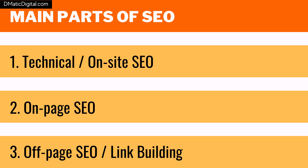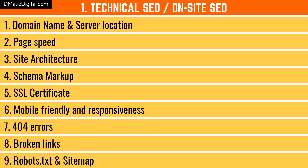You can categorize these 200 signals into three parts — or three major parts of SEO. First is technical SEO or on-site SEO. Second is on-page SEO. And third is off-page SEO, also known as link building. Let's quickly learn about all three parts of SEO.